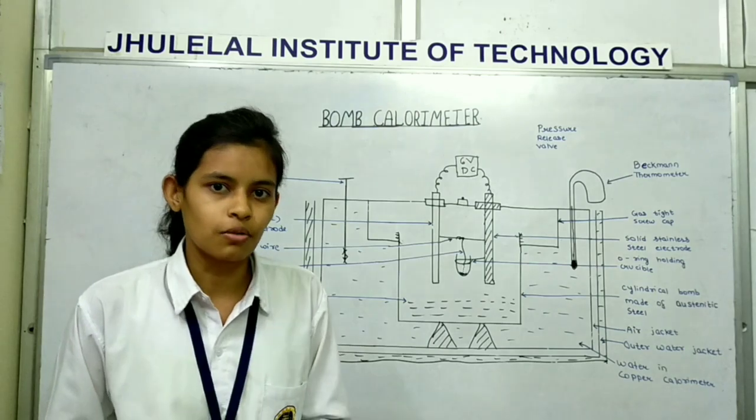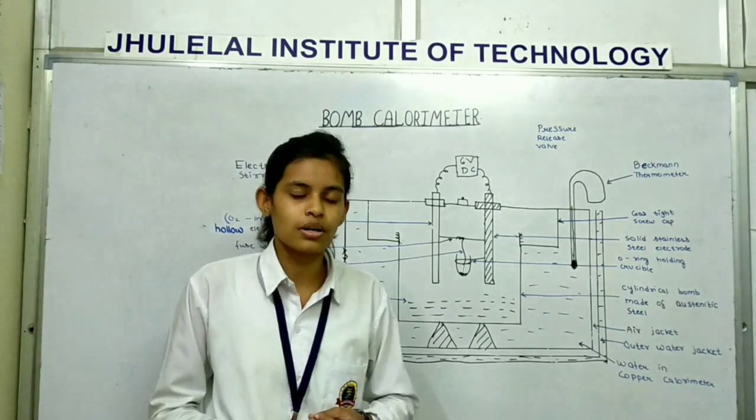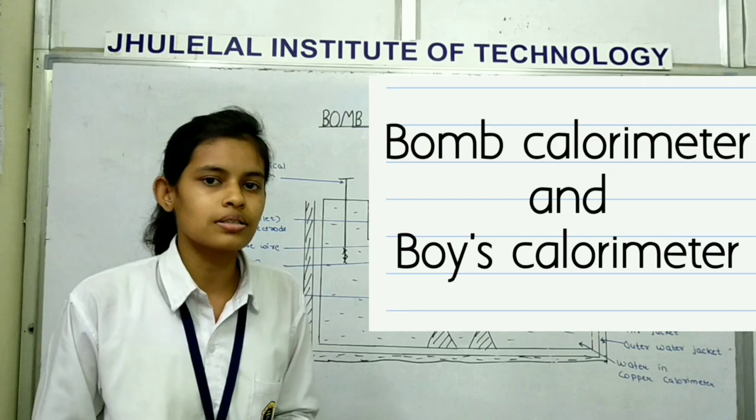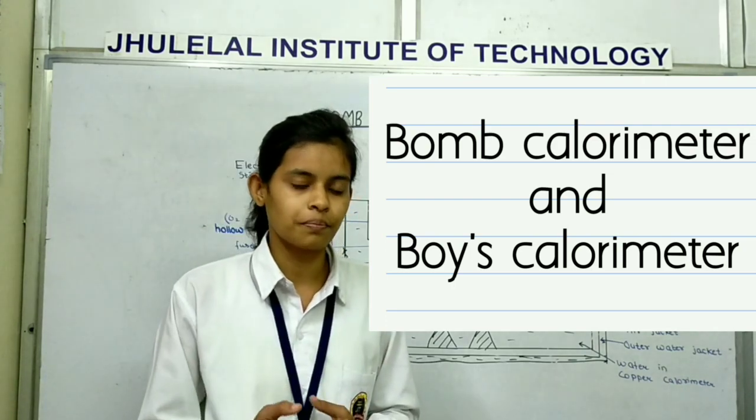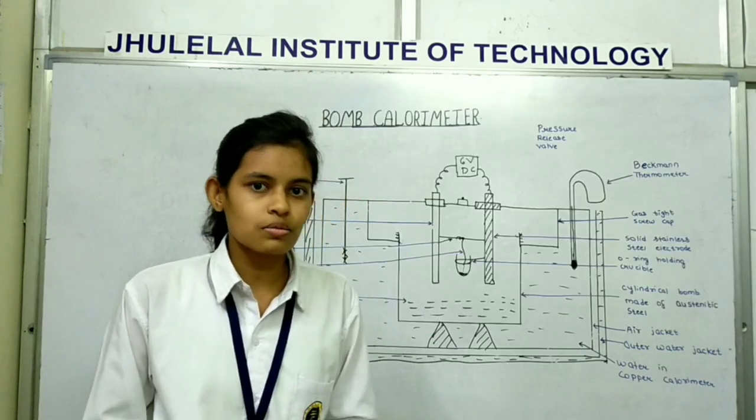Let's look at the estimation of calorific value. They are of two types: one is bomb and the another is boils calorimeter. What is bomb calorimeter?